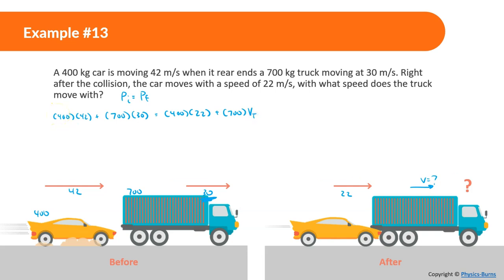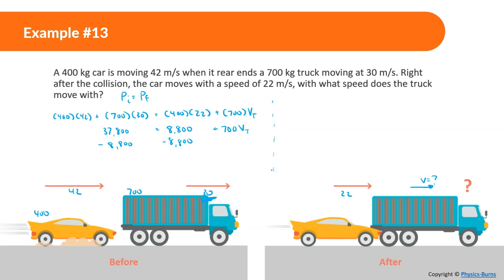Working through the math: 400×42 plus 700×30 equals 16,800 plus 21,000, which is 37,800. That equals 400×22 plus 700×v, so 8,800 plus 700v. Subtracting 8,800 from both sides: 29,000 equals 700v. Dividing both sides by 700, the velocity of the truck after the collision is 29,000 ÷ 700, which is 41.43 meters per second.